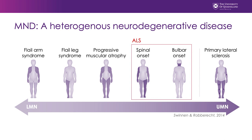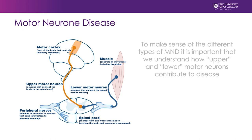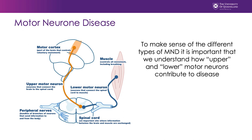Generally speaking, these patients present with either a spinal onset form of disease or a bulbar onset form of disease. This can get complicated very quickly, and so I'm going to use this very simple diagram to illustrate how upper motor neurons and lower motor neurons work together to control our muscles, and how these neurons then contribute to the different types of motor neuron disease.